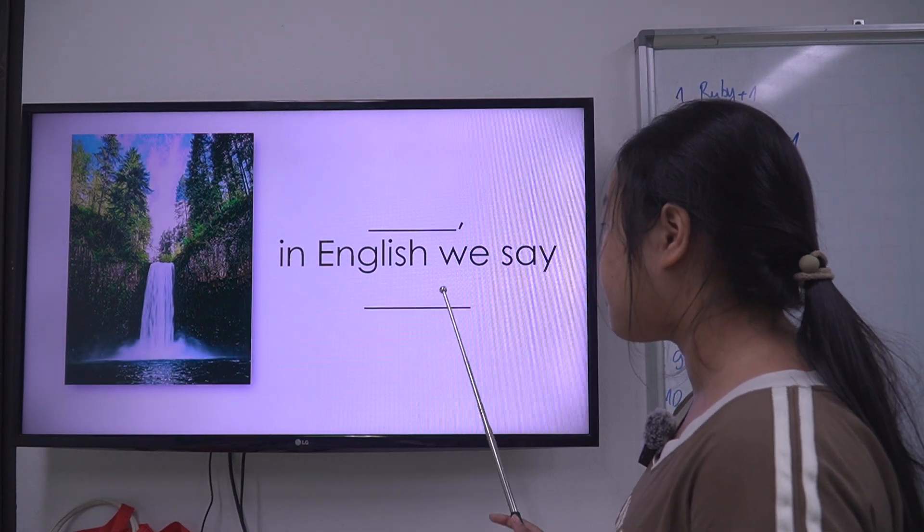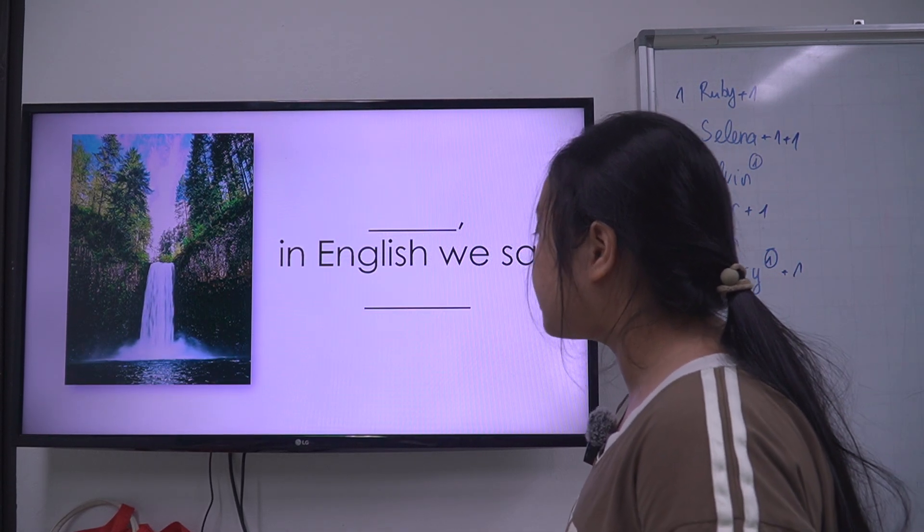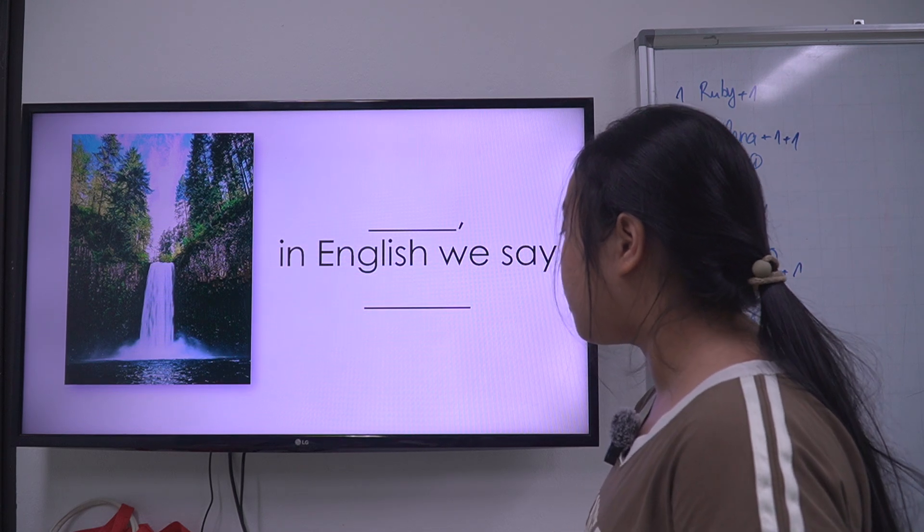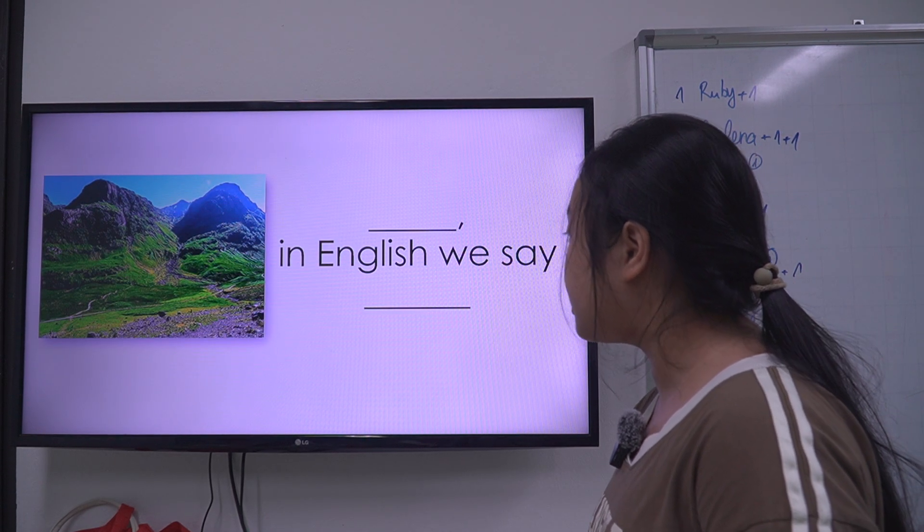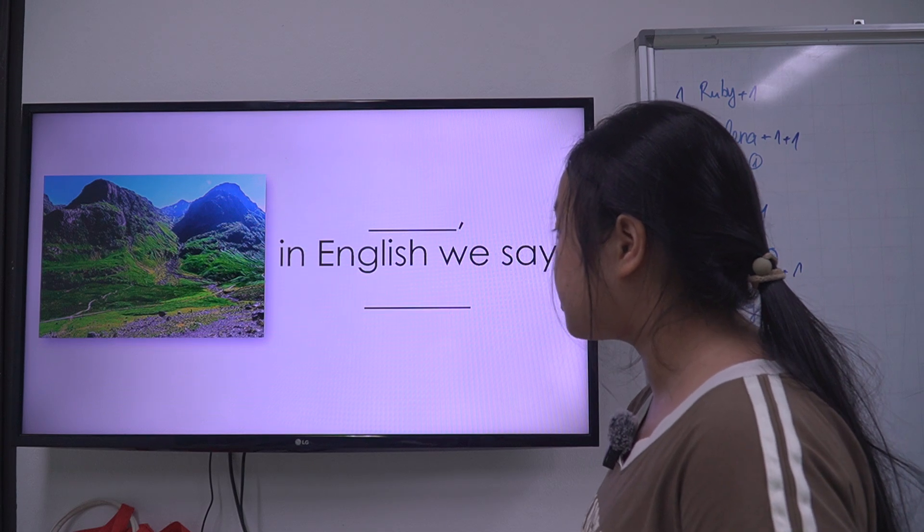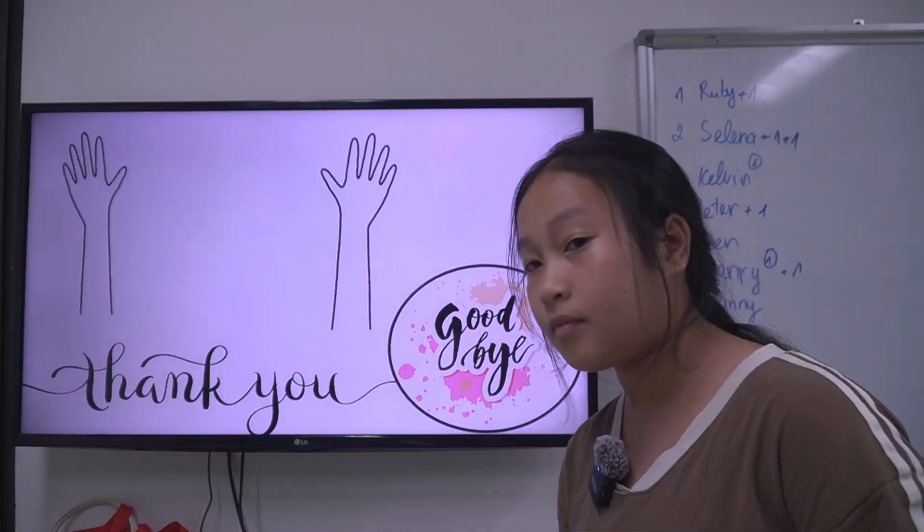Next, how do we say thác nước in English? We say waterfall. Beautiful. Next, how do we say ngọn núi in English? We say mountains. Okay, that's all. Thank you and goodbye. Goodbye.